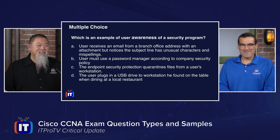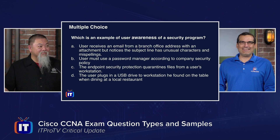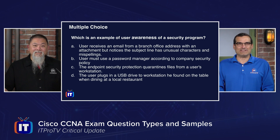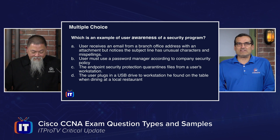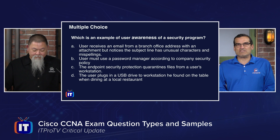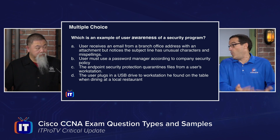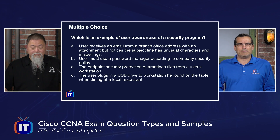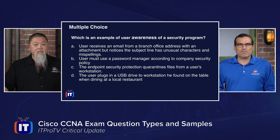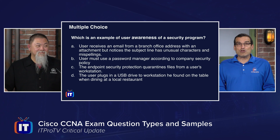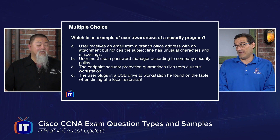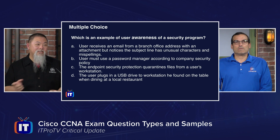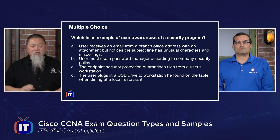Anthony walks through his elimination strategy. He immediately removes D — plugging in something you found at a restaurant is not awareness. He eliminates C because endpoint security quarantining files happens without the user being aware of anything. That narrows it to A and B. B is about a password manager per policy, while A is about the user noticing unusual characters. He goes with A as his final answer, which is correct. The keyword is 'notices' — that's the indicator of user awareness. Pay attention to keywords in the question.